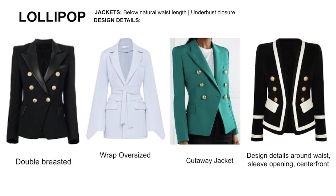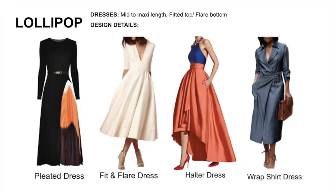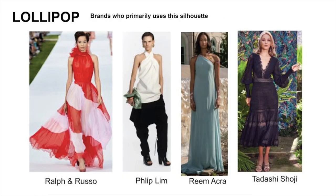Shift focus to the waist and sleeve opening. For coats, go with an A-line shape to narrow the shoulders, and midi to full length. For dresses, go with a fitted top to fuller bottom ratio. Here are some designers who design around this shape. This silhouette is used primarily in bridal.